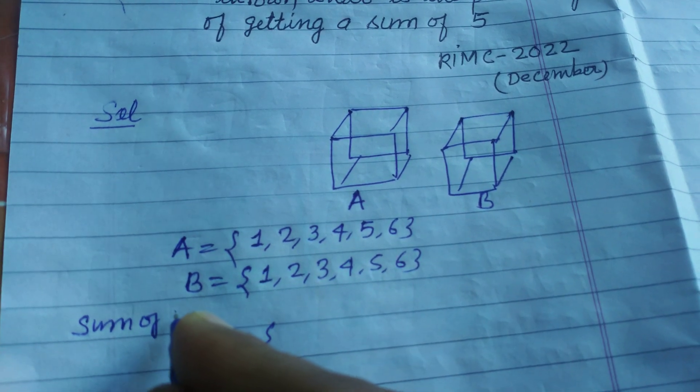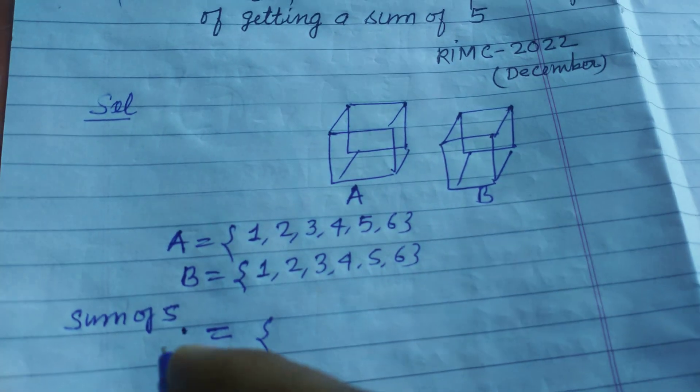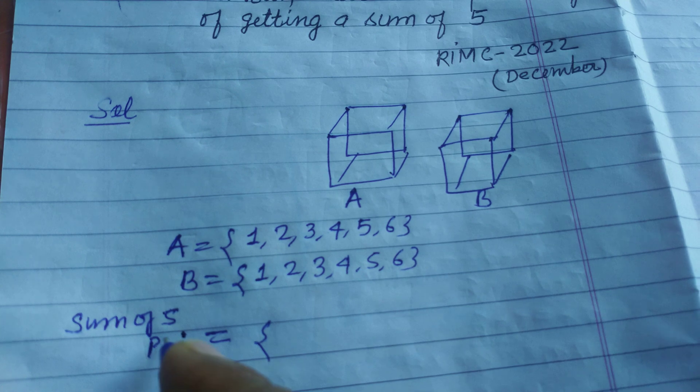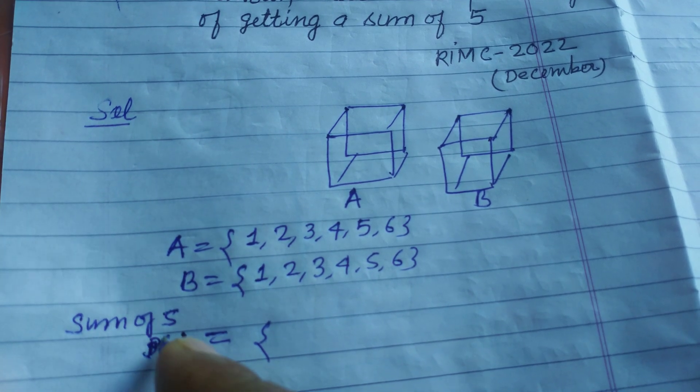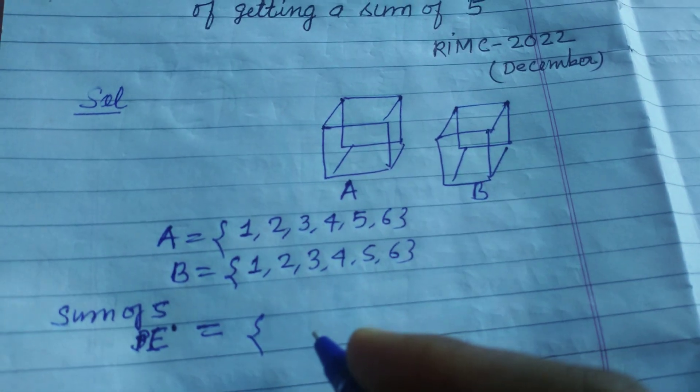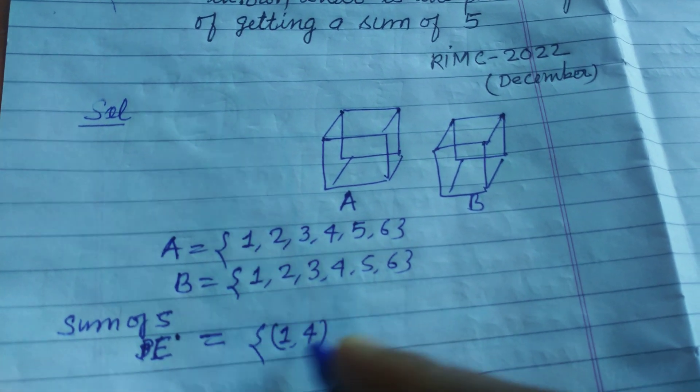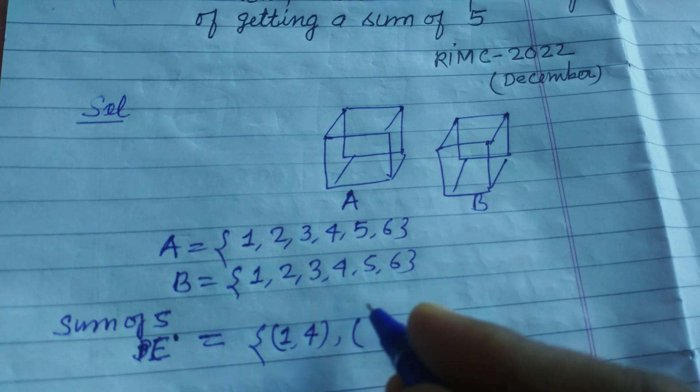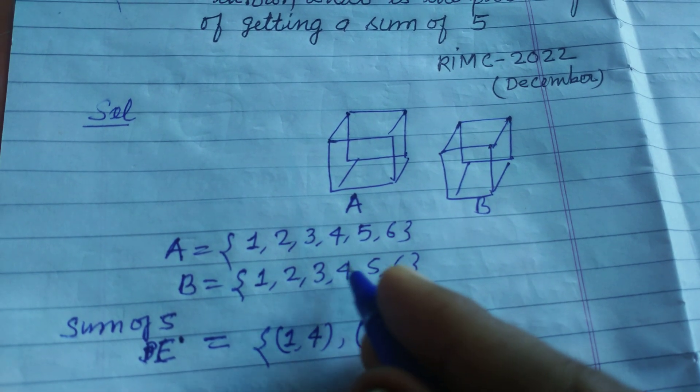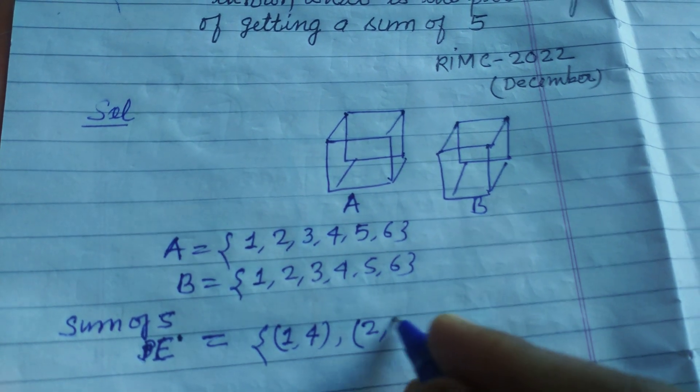Sum of five, E elements in this set are 1, 4. The sum is 5. And another is 2, 3.